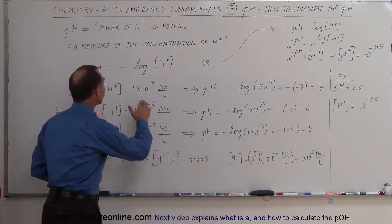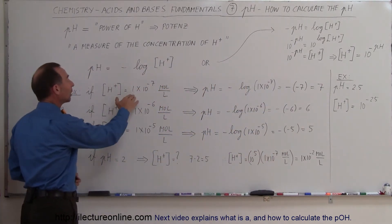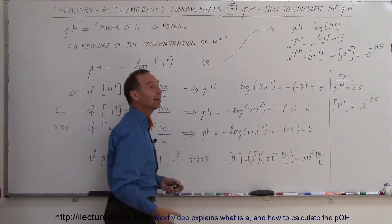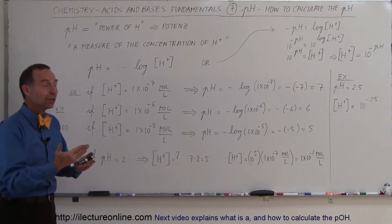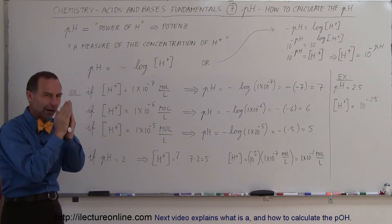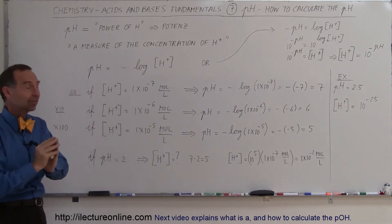That means if the concentration of the hydrogen ion is 1 times 10 to the minus 7 moles per liter, the pH is 7. And if you see that, you know that the solution is neutral. It's neither an acid nor a base. It's right at the hairy edge between an acid and a base.